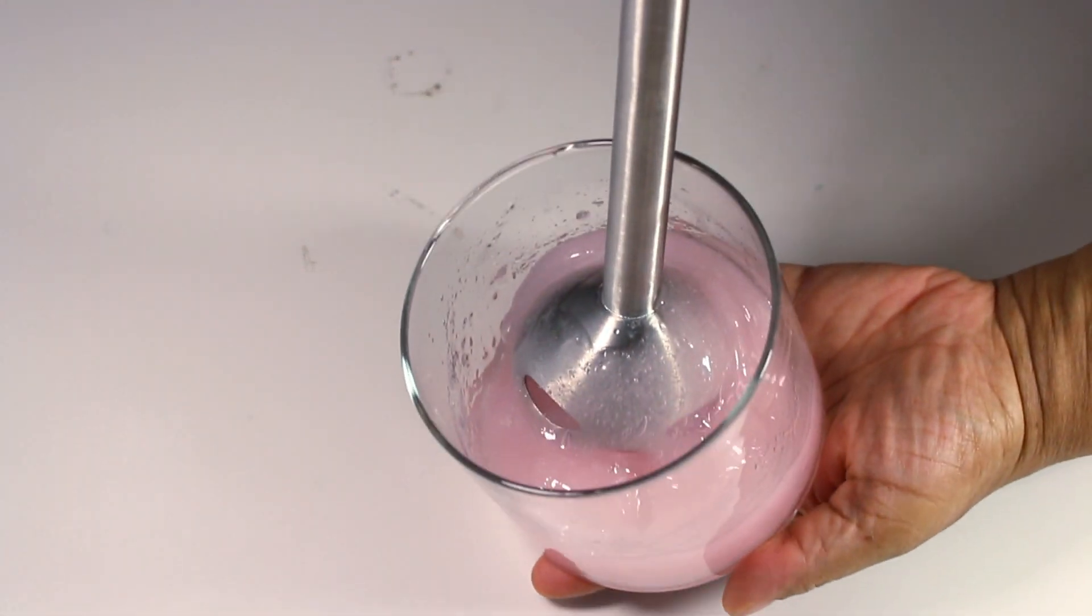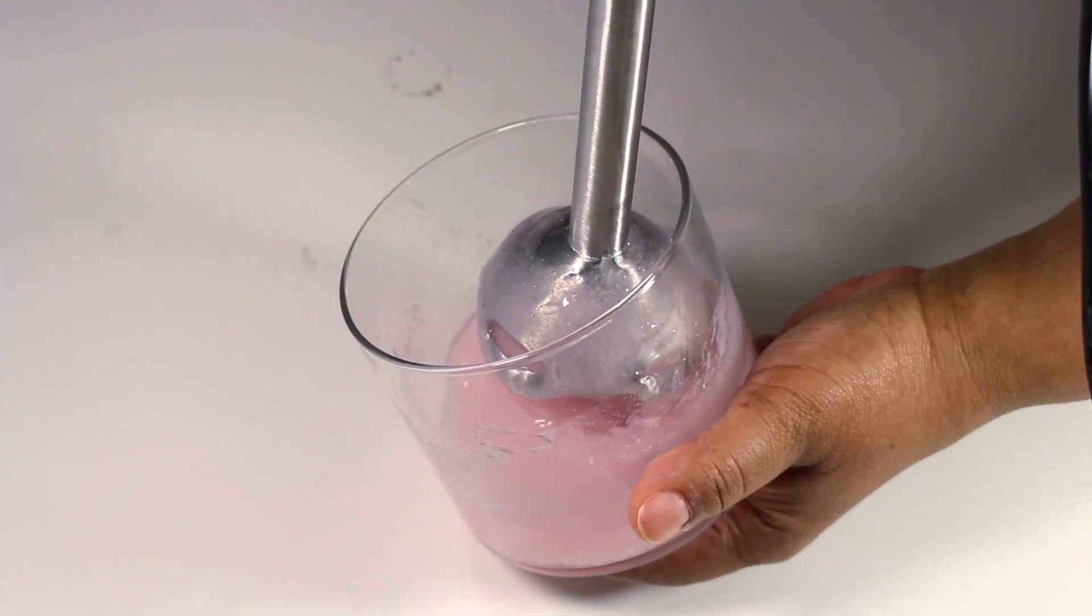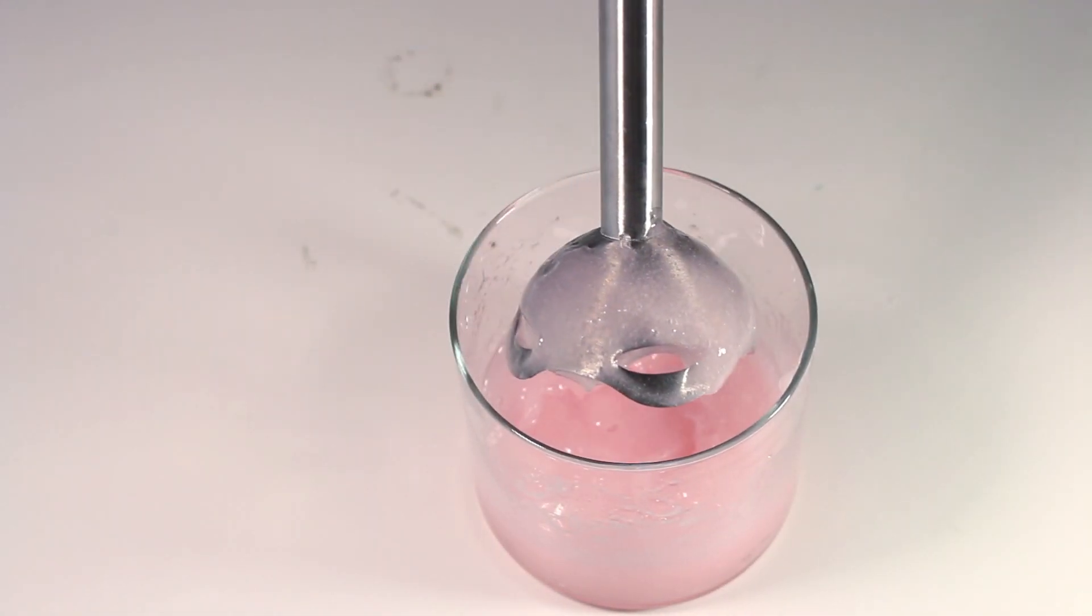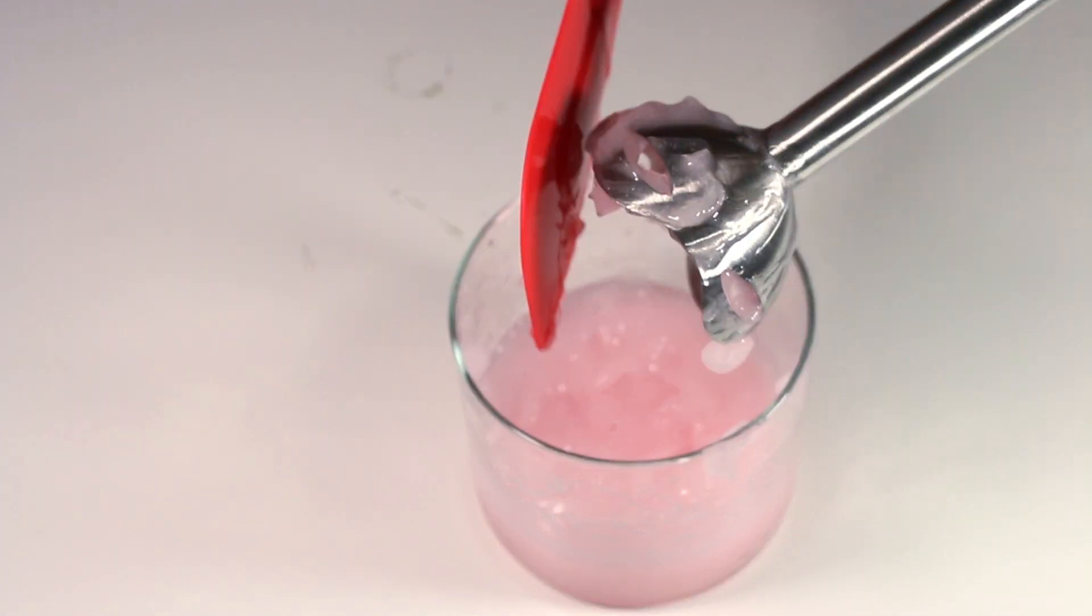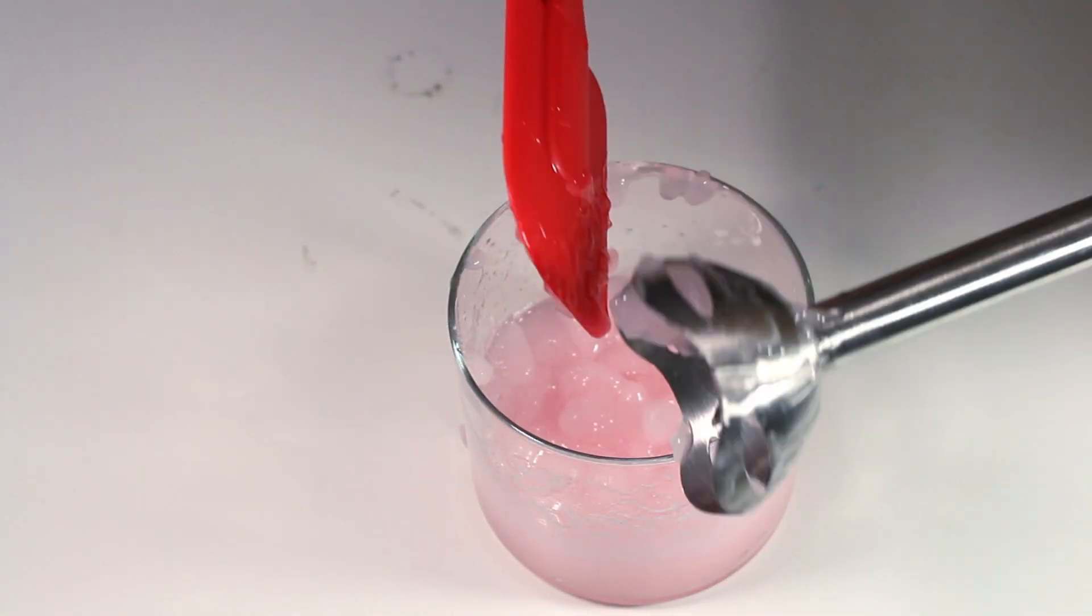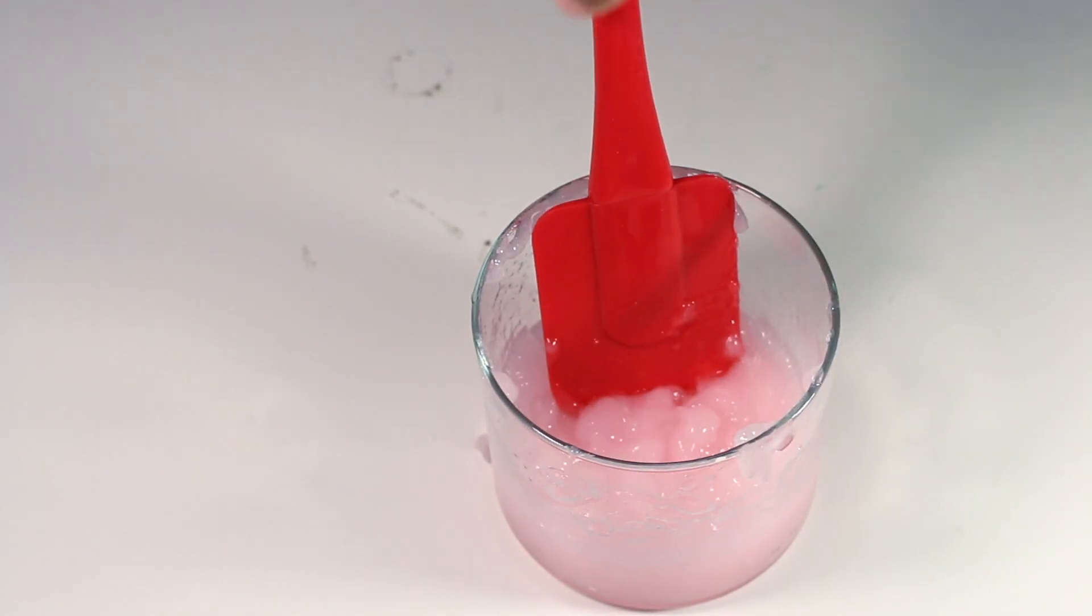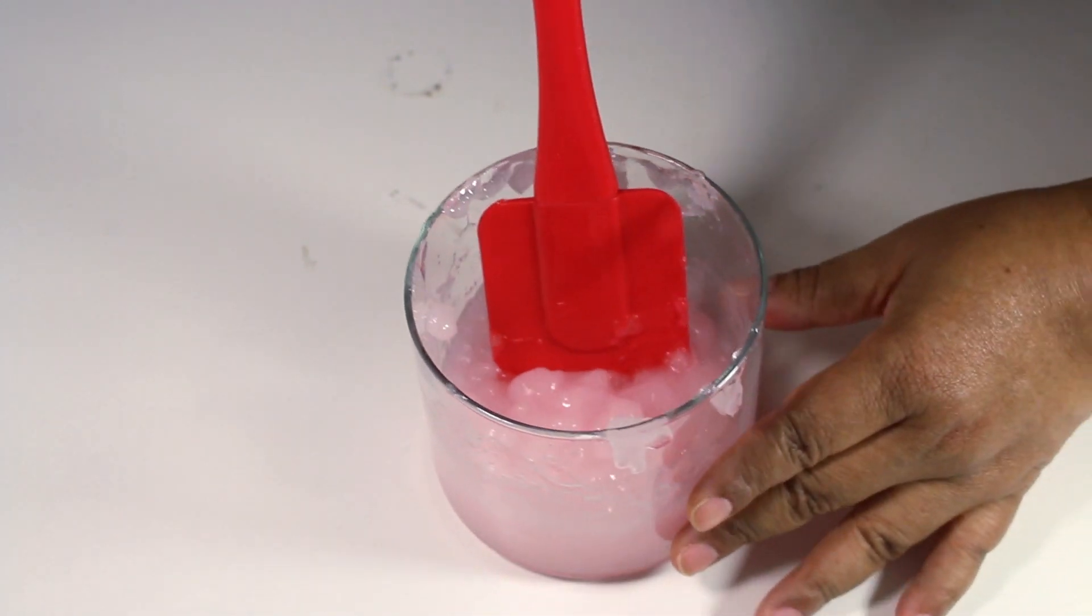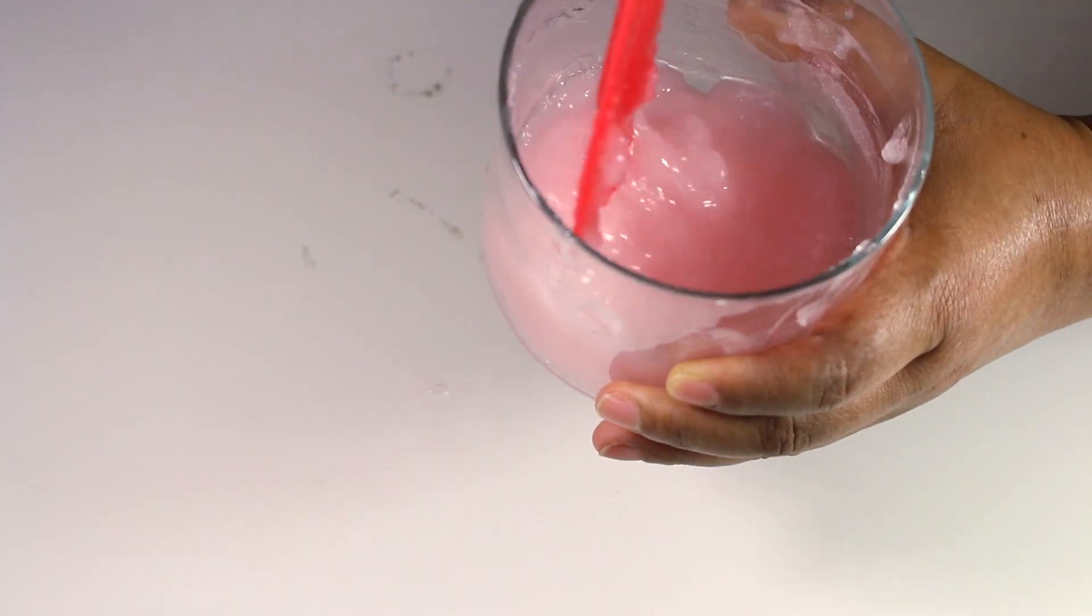You want it to look like this. It's going to kick up some bubbles, but those will, a lot of them will pop later. Not to worry. You can see the texture. It's really kind of like gelled and clumpy. Not to worry. It's going to smooth out beautifully.